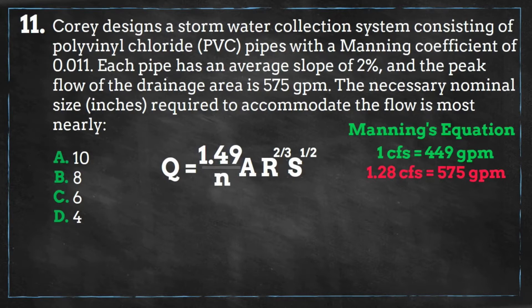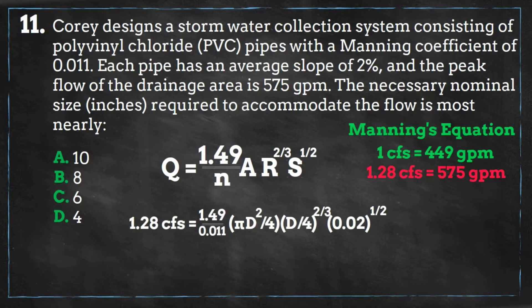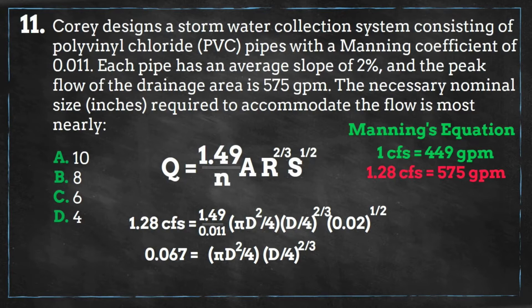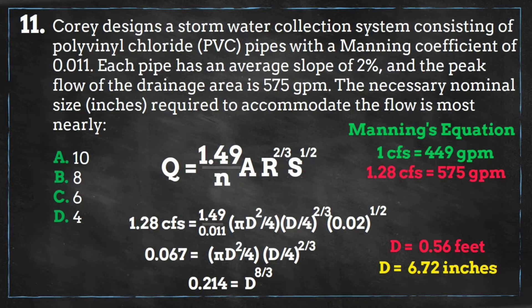Let's plug our info into the Manning equation. Working slowly towards solving for the diameter and getting rid of the easy terms first, we are left with 0.214 equaling the diameter raised to the 8/3 power. Raising both sides to the 3/8 power, we get D equal to 0.56 feet, which is equal to 6.72 inches. For nominal sizes, we go with the next highest size to accommodate our maximum flow, so the answer is B, 8 inches.